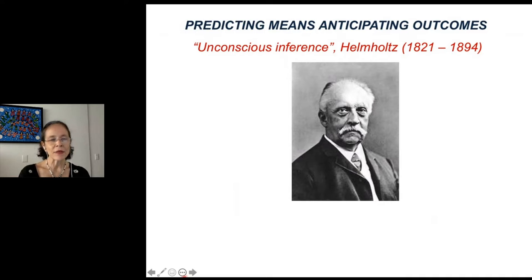The idea that the brain makes predictions so as to anticipate outcomes goes back to the pioneer work of Hermann von Helmholtz, a 19th century multiscientist who introduced the notion of unconscious inference. Helmholtz conjectured that inferring about future events should be a crucial mechanism for learning and memory formation.